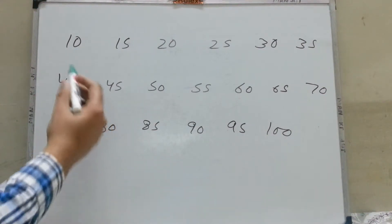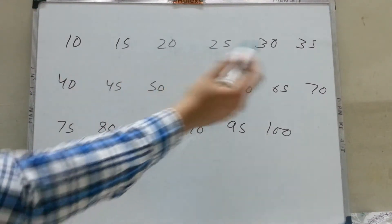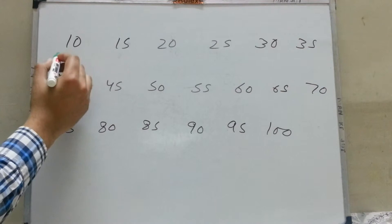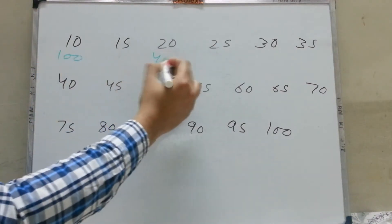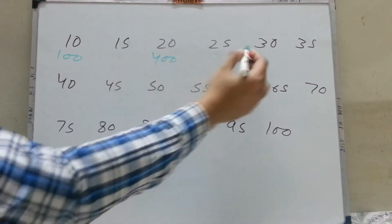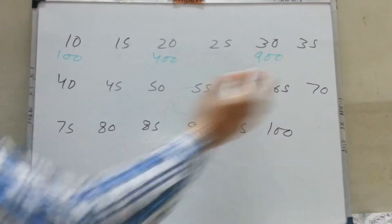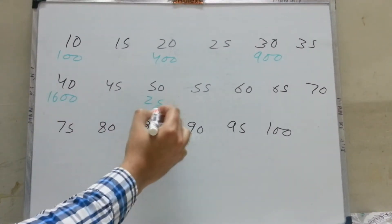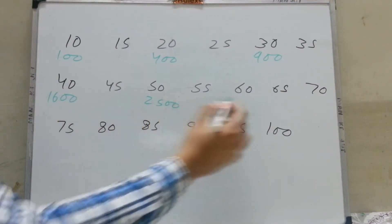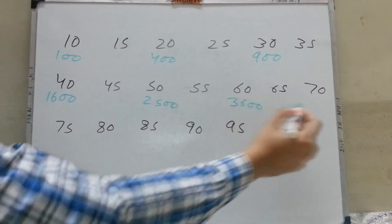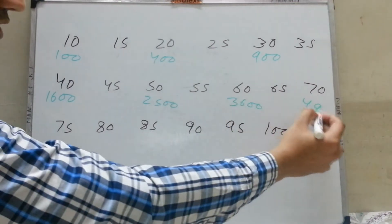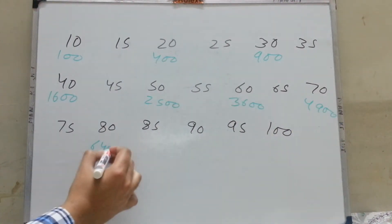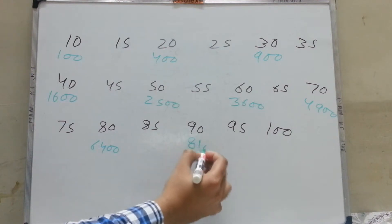You can calculate the squares of 10, 20, 30, 40, 50, 60 and so on. The answer of 10 squared is 100, 20 squared is 400, 30 squared is 900, then 1600, 2500, 3600, 4900, 6400, and 8100.